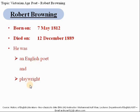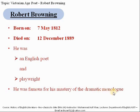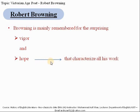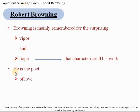The most important thing Robert Browning is famous for is his mastery of dramatic monologue. When we study his poetry, we observe that Browning is mainly remembered for the surprising vigour and hope that characterises all his works. We find that force and strength in most of his work that is missing in some other poets of that time, making him the poet of love and of life.